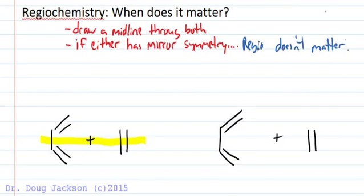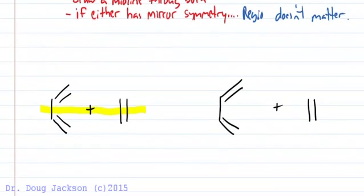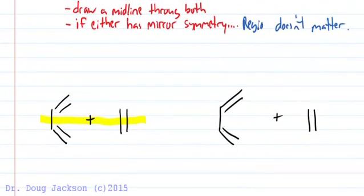For the first example that we did, it doesn't matter. Other examples where the regiochemistry wouldn't matter: if we had equally substituted diene here or here, we get that, the mirror plane here.